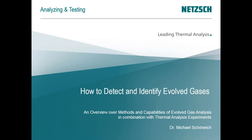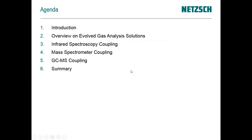Hello and welcome. My name is Michael Schönerich and today we want to talk about evolved gas analysis — how we could detect and identify evolved gases in the field of thermal analytic experiments. I will give you a brief introduction about what evolved gas analysis is, why we want to do this in the field of thermal analysis, and we will go more in detail about three common solutions: infrared spectroscopy, mass spectroscopy, and GCMS coupling.